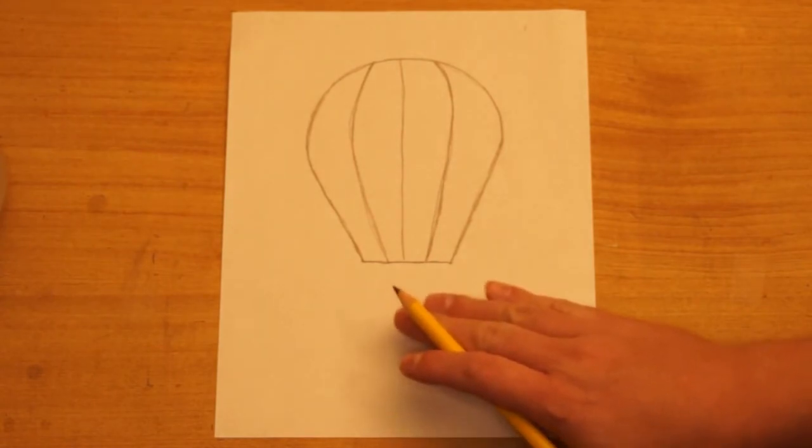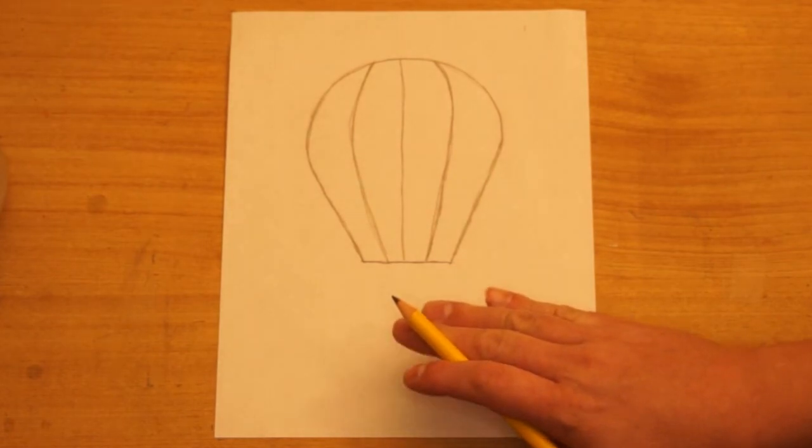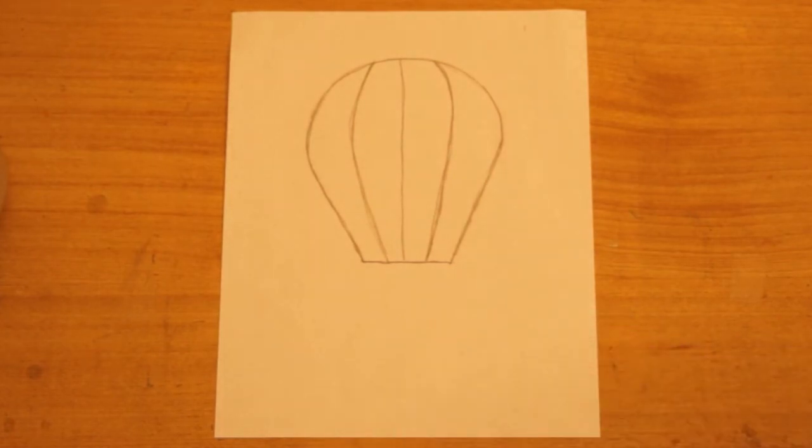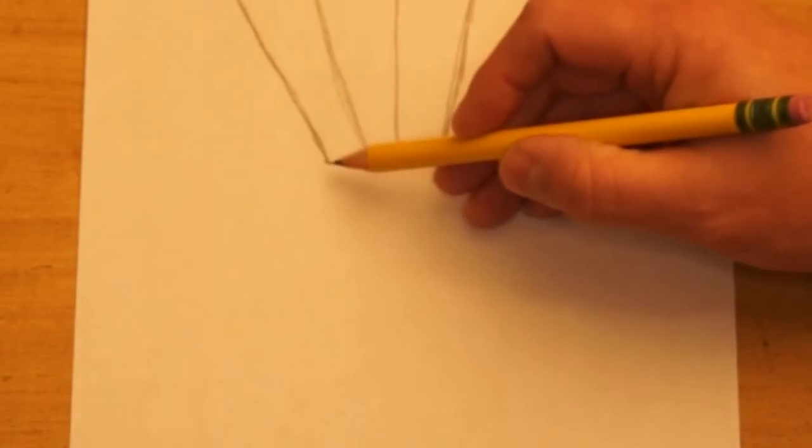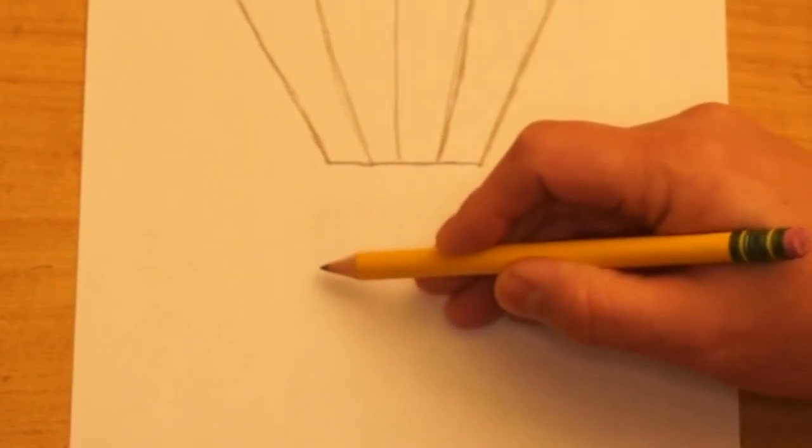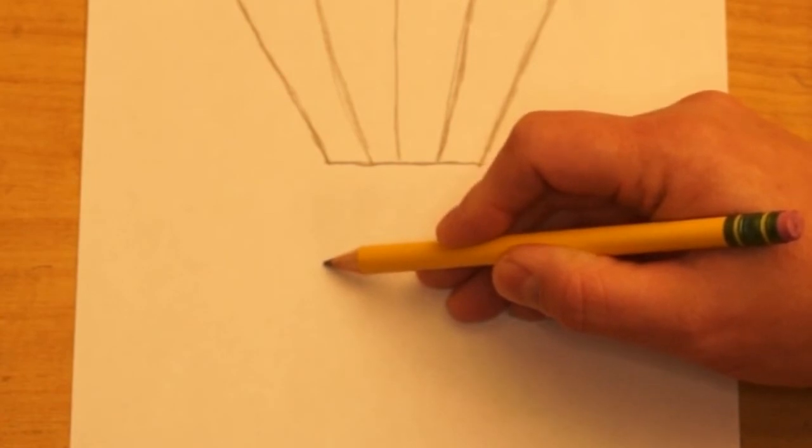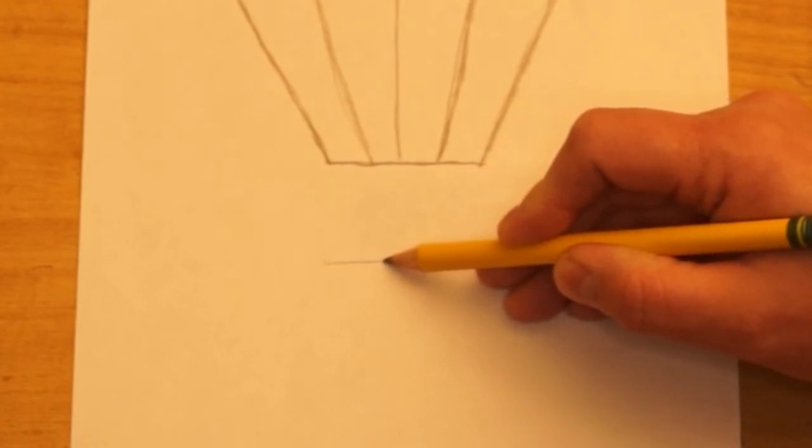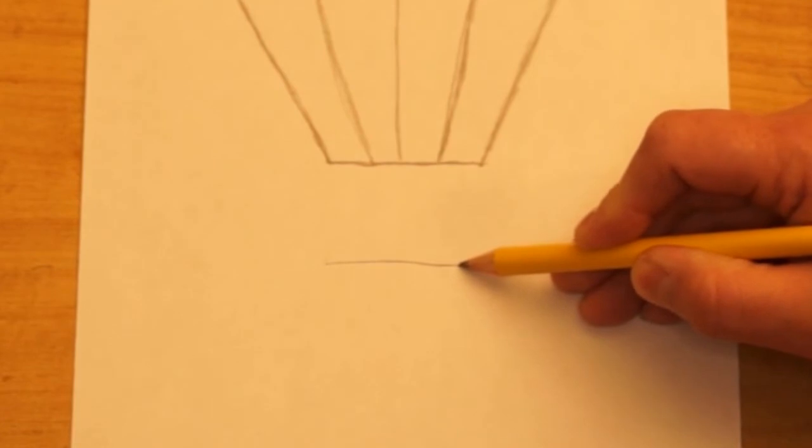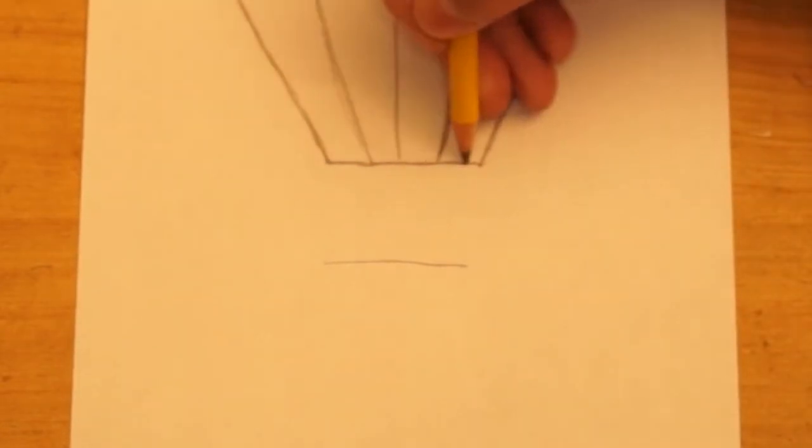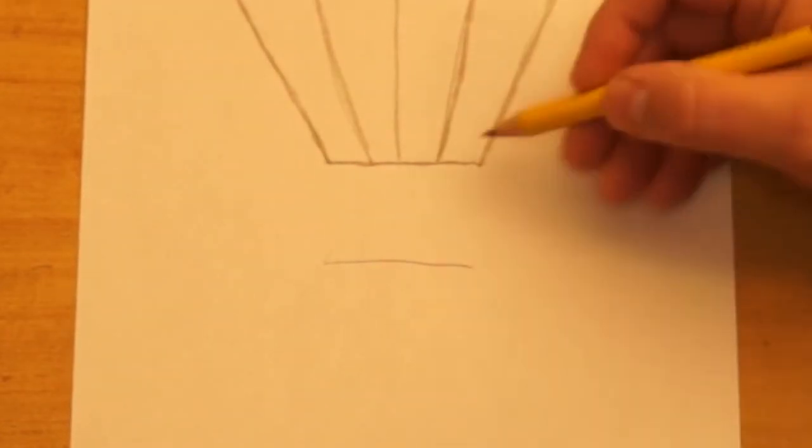Next we're going to make a basket underneath the balloon. And that's what people ride in when they ride in a hot air balloon. I'm going to come down a ways from the bottom edge. And I want to draw a horizontal line the same size as this line up here. In fact, it's right underneath that line.